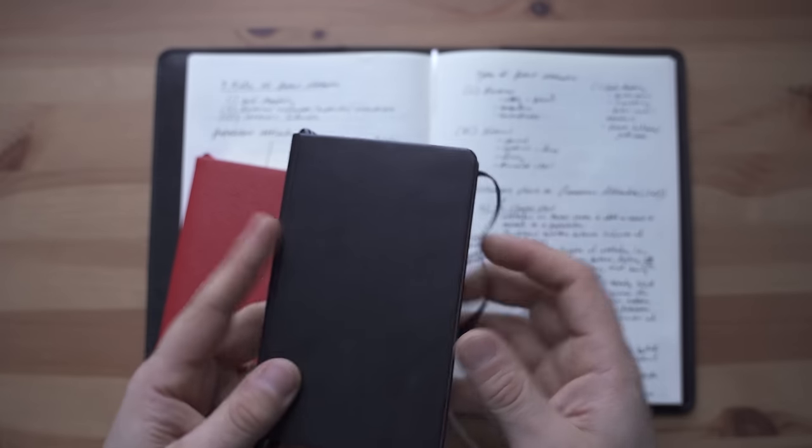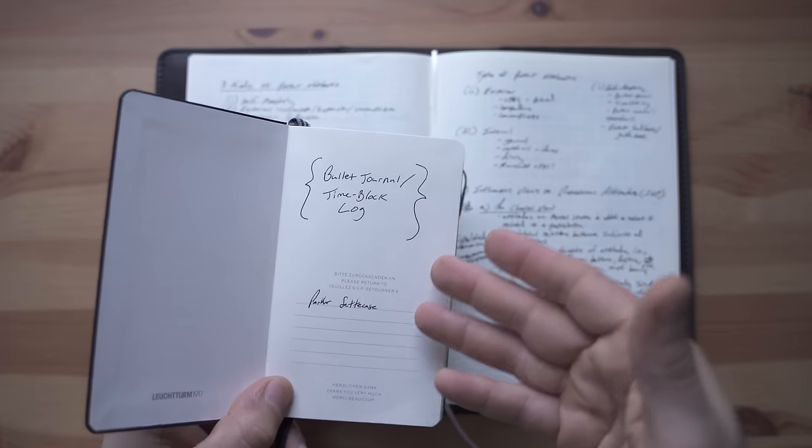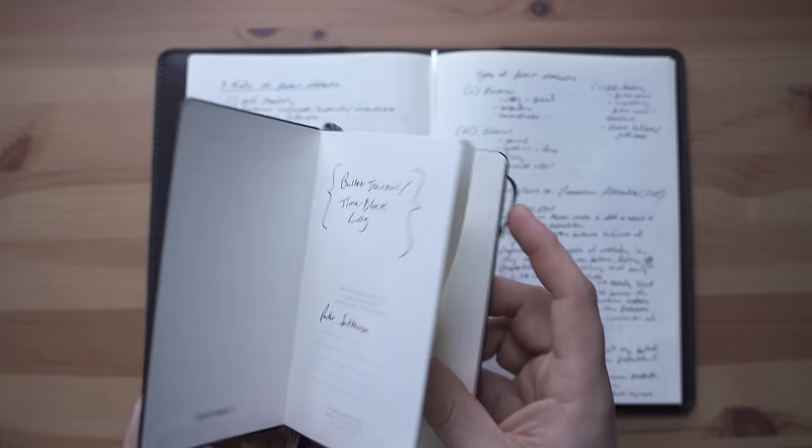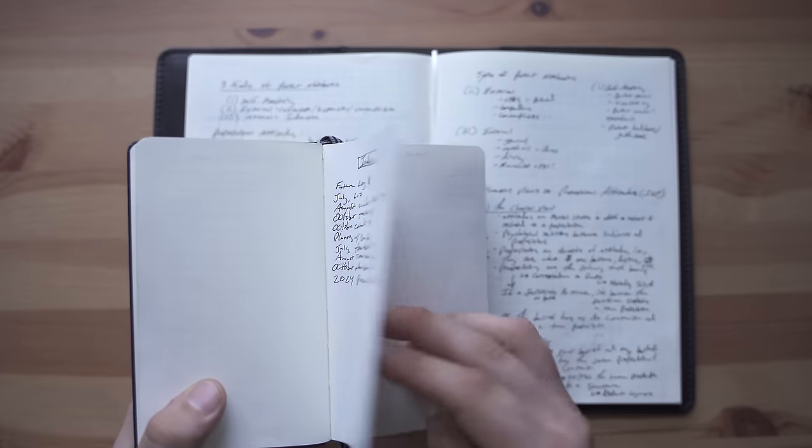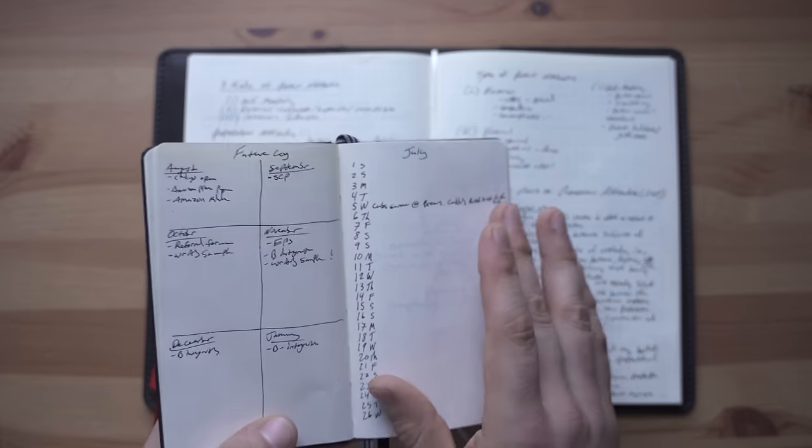So here I have my bullet journal slash time block log. I've made a video about this one as I have with many others. And this is exactly what it sounds like. It's a cross between a bullet journal and Cal Newport style time block logging.